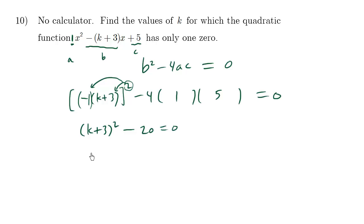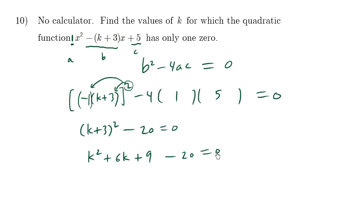We have a binomial squared, so using FOIL: k squared, k times positive 3 is 3k, doubled is plus 6k, and 3 times 3 is 9. Then minus 20 equals 0. So 9 minus 20 is negative 11, giving us k squared plus 6k minus 11 equals 0.